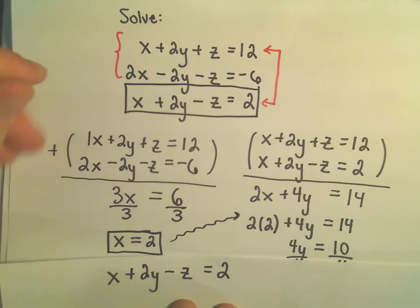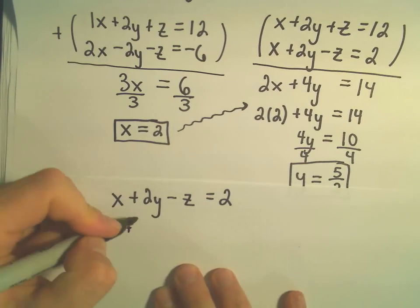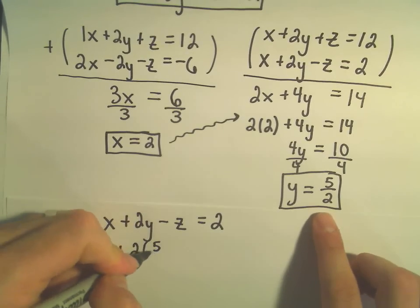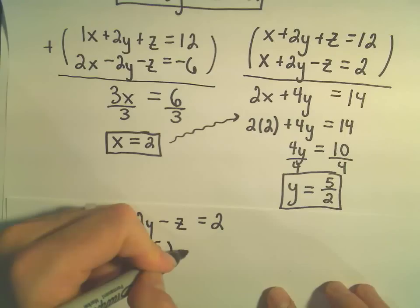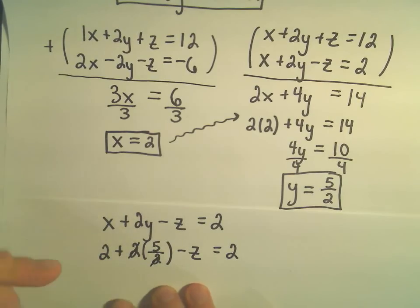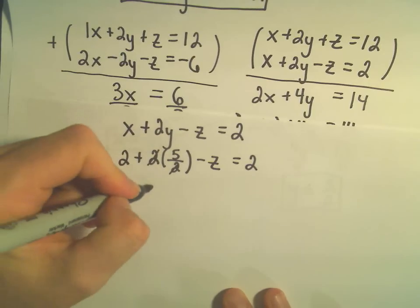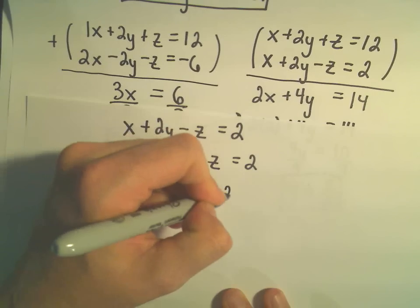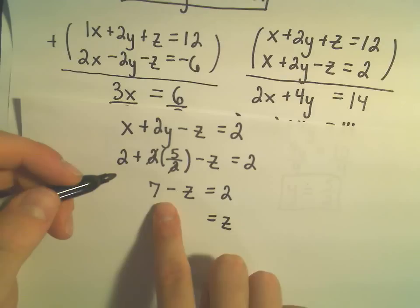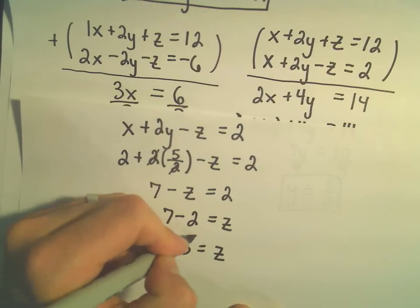Well, okay, we knew our x value, we figured that out was positive 2, so I'm going to plug that in. We figured out our y value over here to be 5 halves, so I'm going to plug that in as well. Minus z equals 2. Well, let's see, the 2 and the 2 will cancel in the middle, so really we're just left with 2 plus 5, which would be 7, minus z equals 2. And we can add z to the right side and subtract 2 from the left side, that would give us 7 minus 2, or z equals 5.